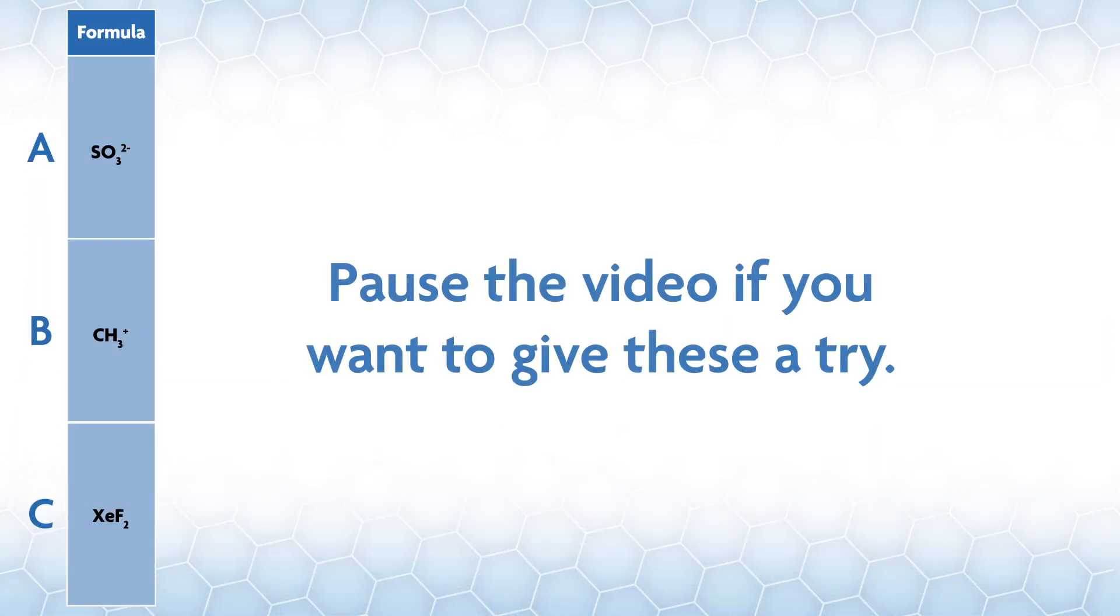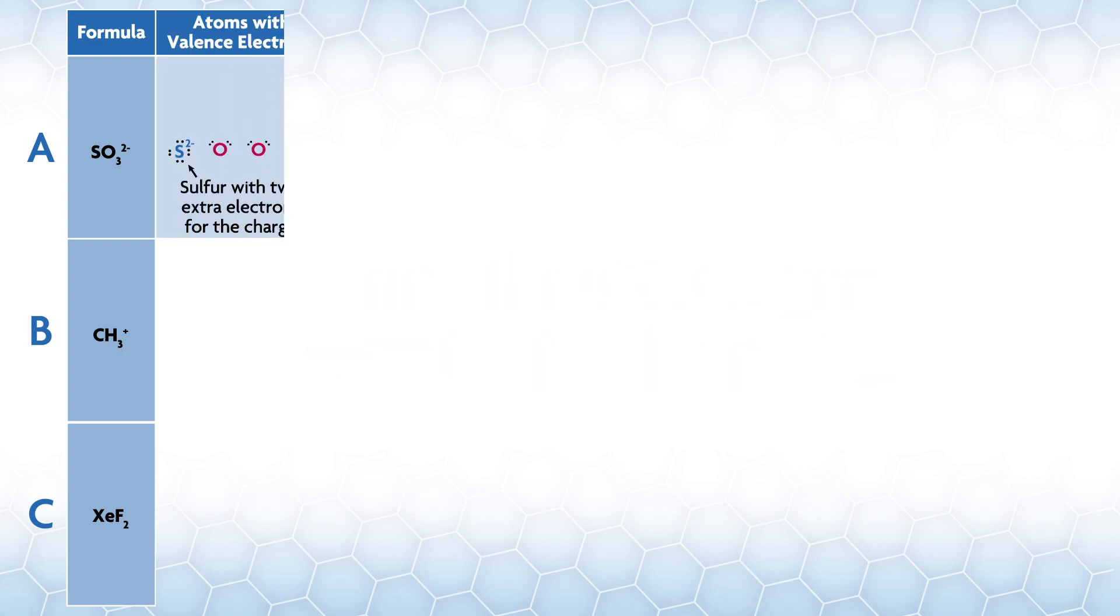The AE2X3 formula has five things on a central atom, which means it has a trigonal bipyramidal structure. The lone pairs take up more space and go into the more open equatorial positions. The structure is generally referred to as T-shaped. Let's do a few more for practice. Here are three more examples - pause the video if you want to give these a try, and I'll give you the answers in three, two, one.